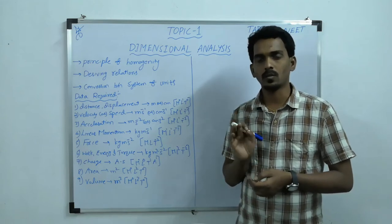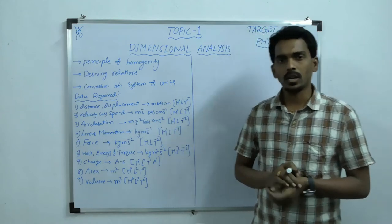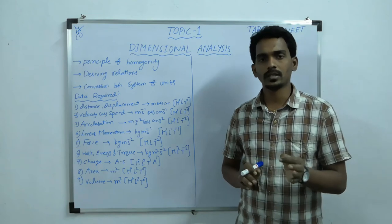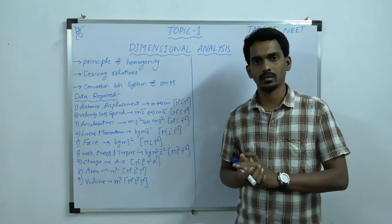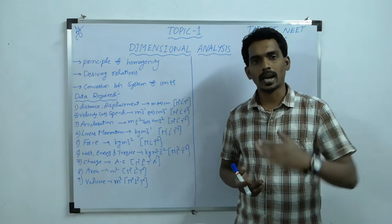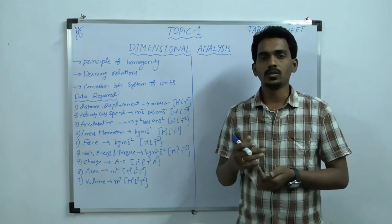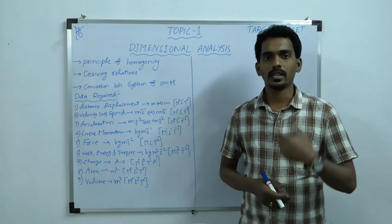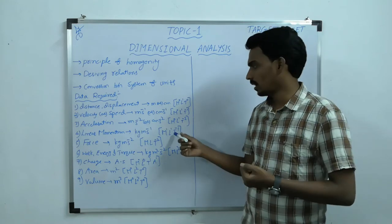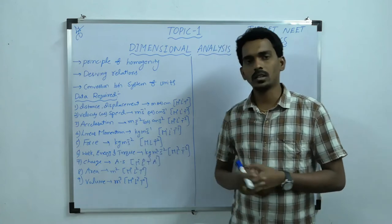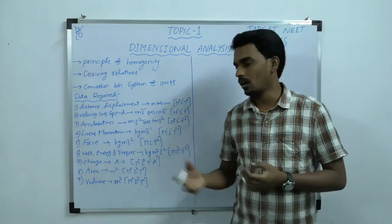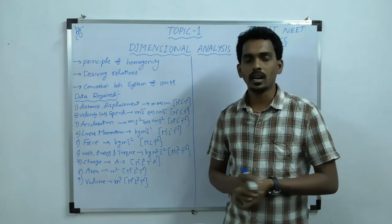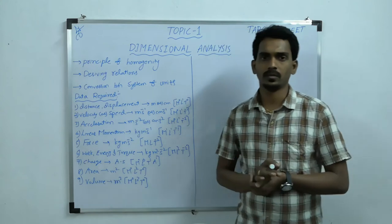The next one is velocity or speed, whose dimension is L T power minus 1. Then acceleration, temperature, work or energy or torque — all will have the same dimensions — and then charge, area, and finally volume. Please remember all these nine quantities' dimensional formulas.